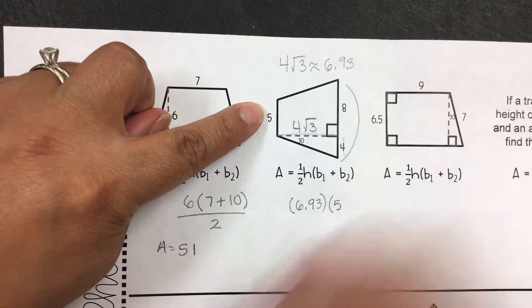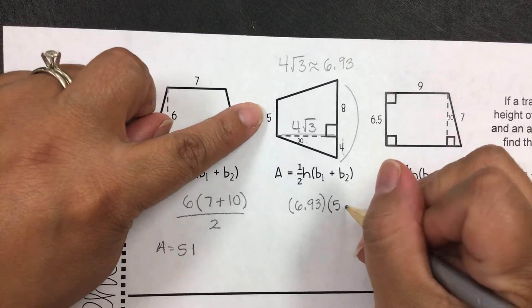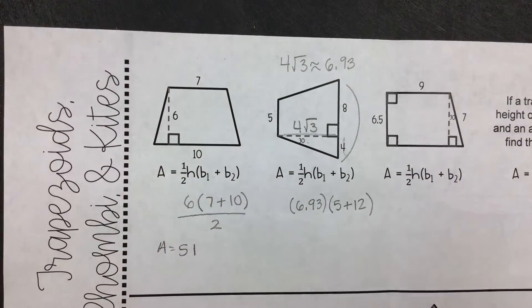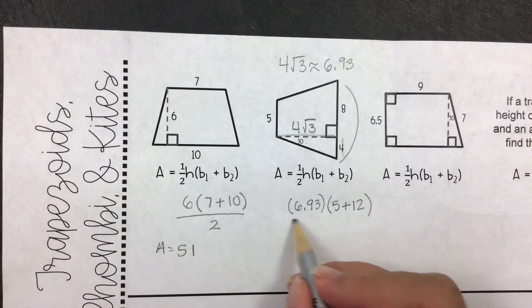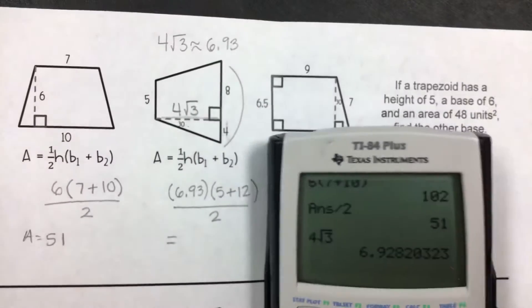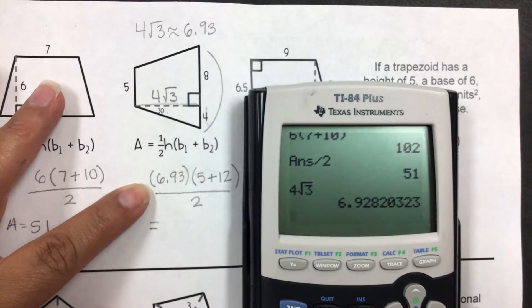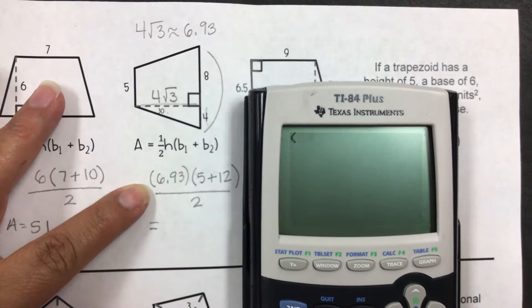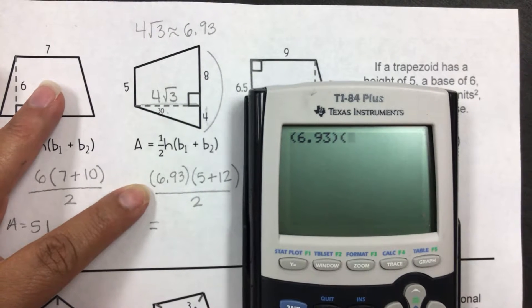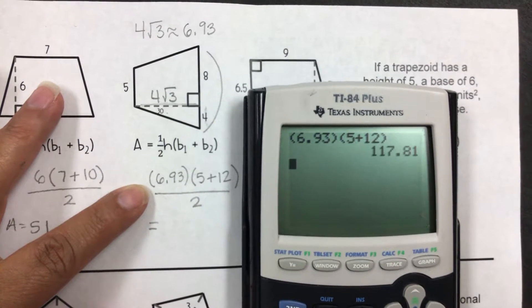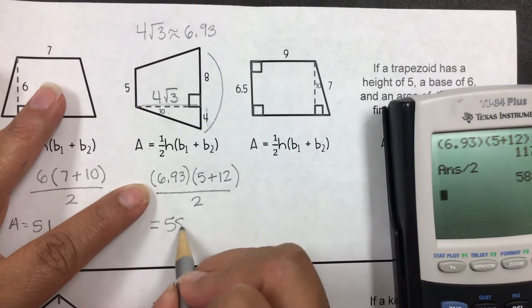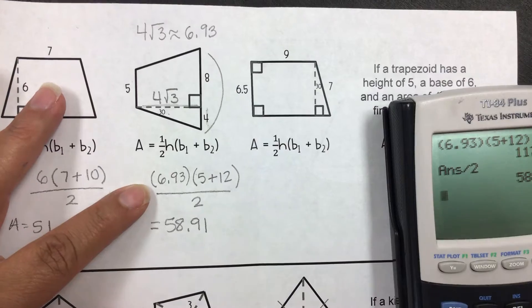If you're not sure what the bases stand for, please let me know and I'll help you. Don't forget to divide by 2. Since there are no variables, we can just go ahead and put it in the calculator. 6.93 times 5 plus 12, hit enter, then divide by 2. 58.91 would be the area.